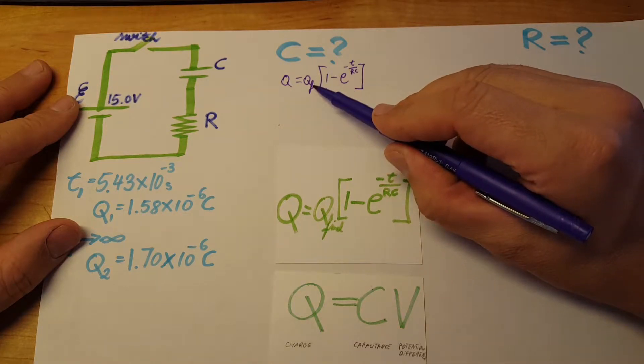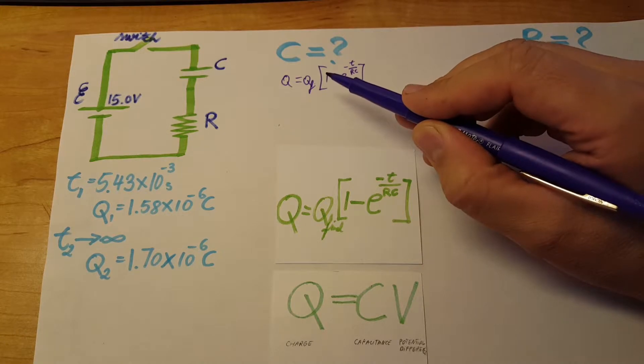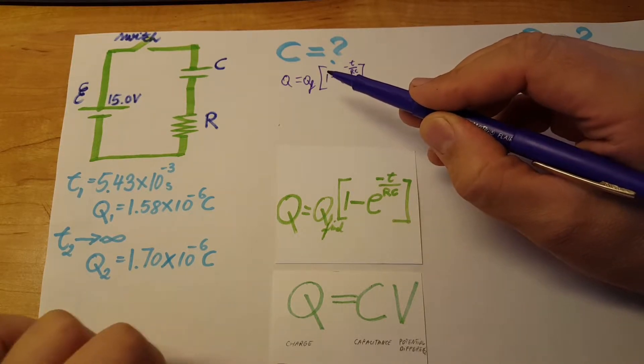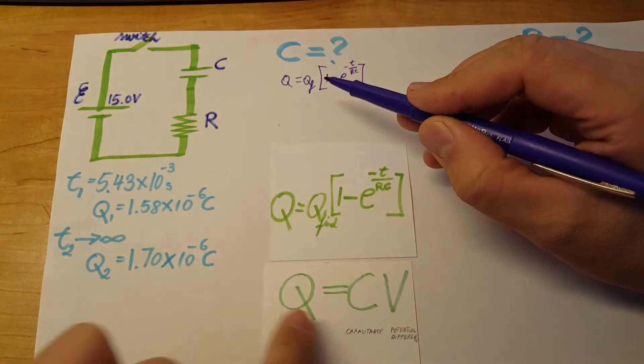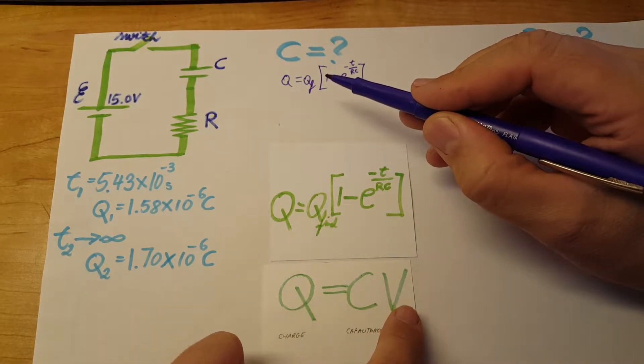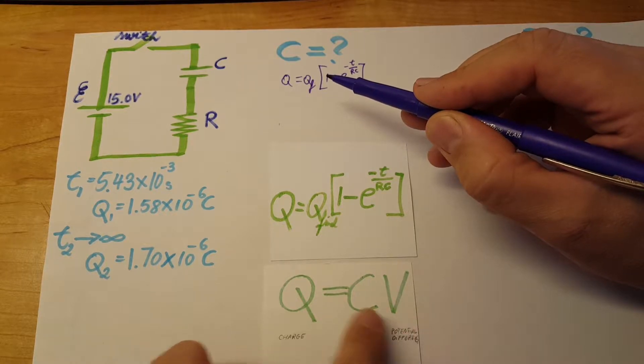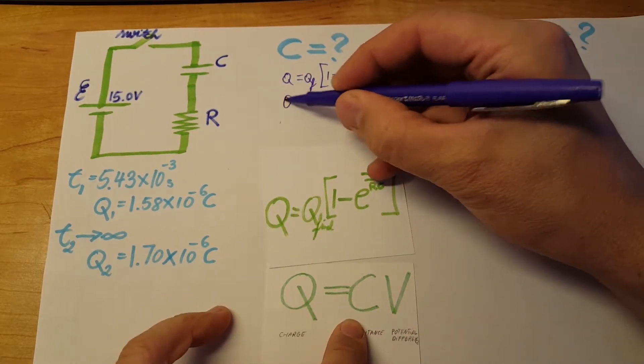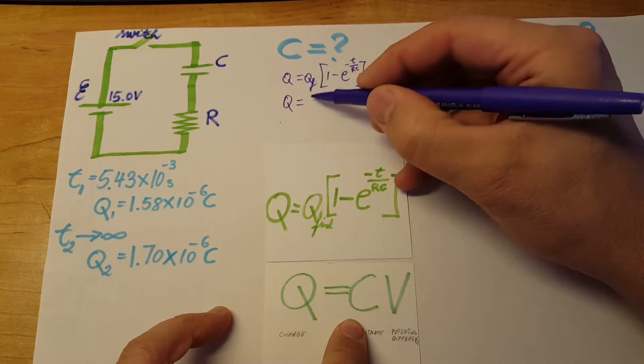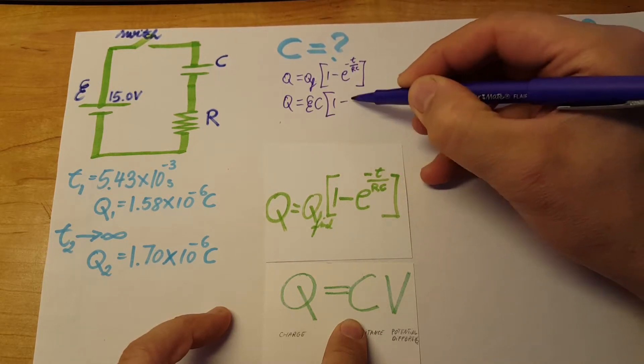We're gonna switch our Q final for EC using Q equals CV. So Q equals EC, and the parentheses stays the same, one minus e to the negative t over RC.